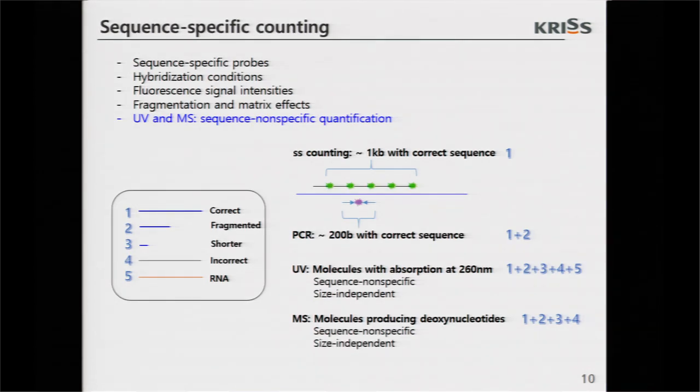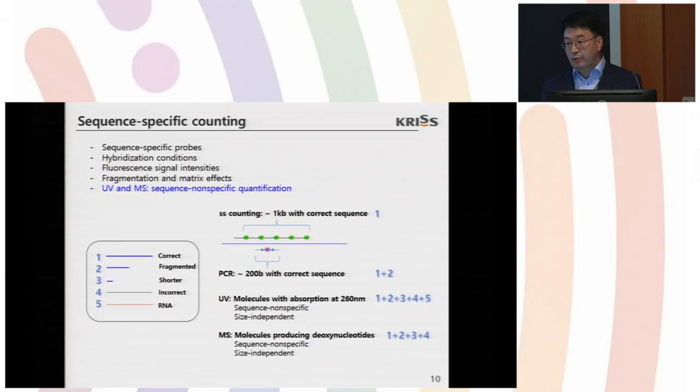After successful demonstration of DNA counting technologies, we wanted to progress to the next step. In previous results, all the counting was sequence-independent, sequence-nonspecific. Discrete DNA molecules were fluorescently activated and they were counted regardless of sequence context. So we want to progress to the next step, that is sequence-specific counting of DNA molecules. We wanted to count only the genes of interest from the pool of nucleic acids.